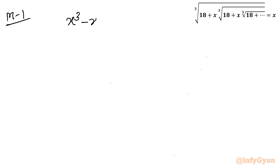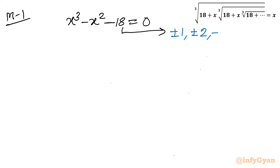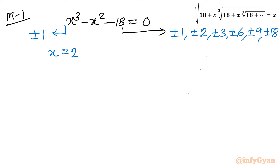We have x cubed minus x squared minus 18 equals 0. By the rational root theorem, the eligible factors of the constant coefficient 18 are plus or minus 1, 2, 3, 6, 9, and 18. The leading coefficient gives plus or minus 1. Let's test x equals 2: 8 minus 4 minus 18 is not equal to 0.